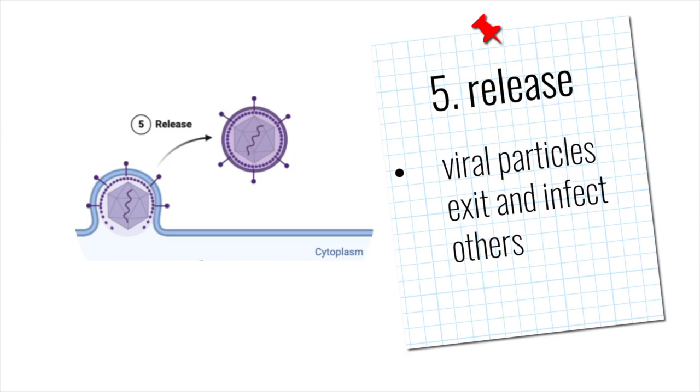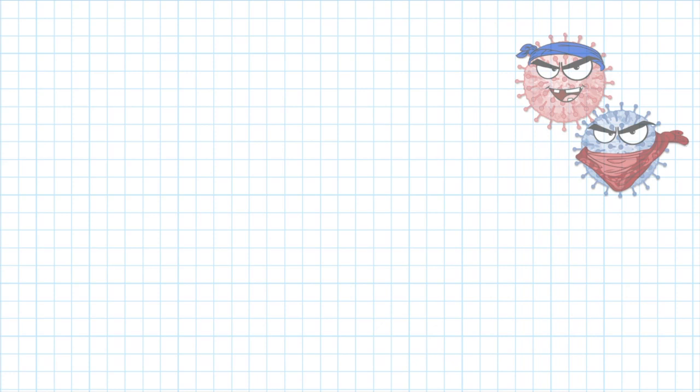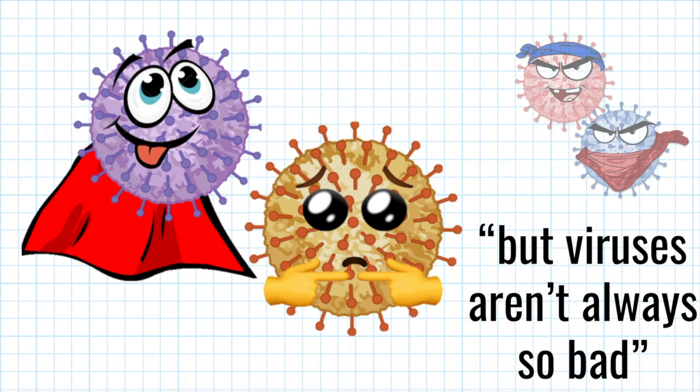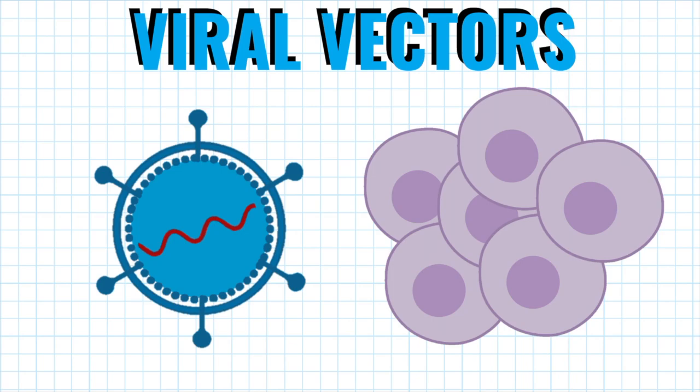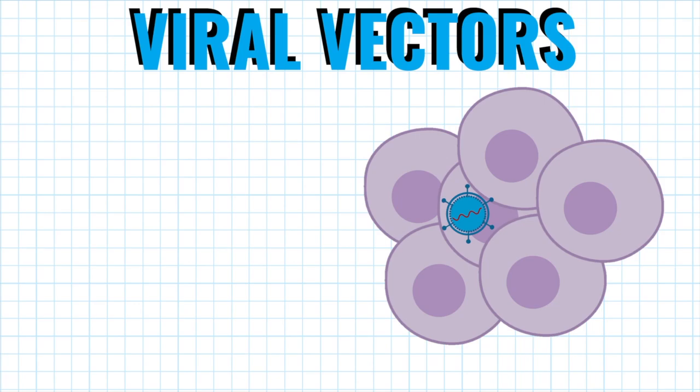Although we've only been talking about viruses in regards to how they infect cells, viruses can also be used in a lot of novel applications. In other words, viruses aren't always so bad. For example, viral vectors are a type of tool designed to deliver genetic material into cells. Since viruses are capable of transporting their genomes inside the cells they infect, we can manipulate this to modify viruses to safely deliver any gene we want into host cells. Viral vectors were originally developed to transfer naked DNA into cells in molecular experiments.